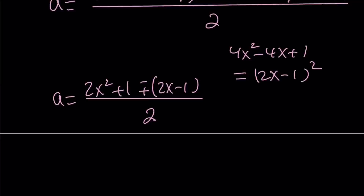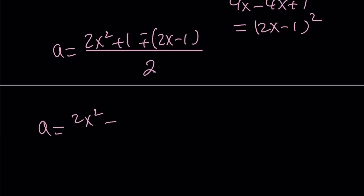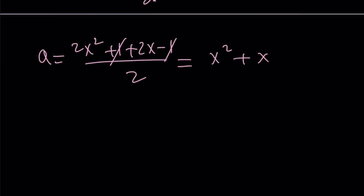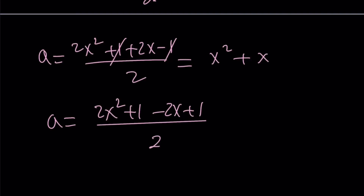Let's split it into two solutions. The first: (2x squared plus 1 plus 2x minus 1) divided by 2, which simplifies to x squared plus x, since the 1s cancel. The second: (2x squared plus 1 minus 2x plus 1) divided by 2, which gives x squared minus x plus 1. So those are the two expressions for a in terms of x.